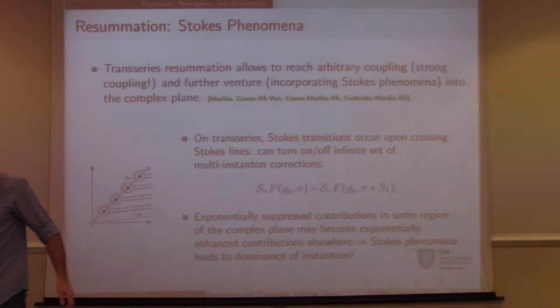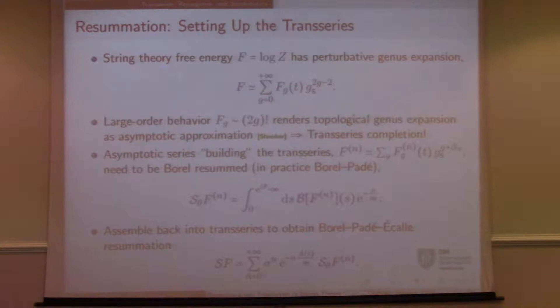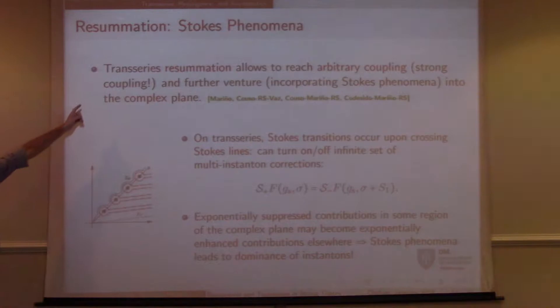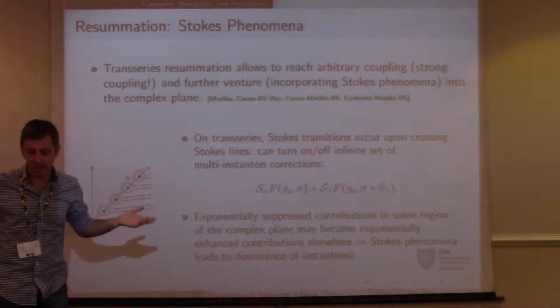Question: You treat F_g(t) — we expand them in positive coupling usually. Answer: No, we know them exactly as functions. Once we have this resummation or approximation to it, I will also try to discuss some analytics. This will allow us to reach arbitrary coupling — arbitrarily strong, arbitrarily negative, arbitrarily complex coupling. You can venture into the complex plane easily as long as you incorporate Stokes phenomenon.